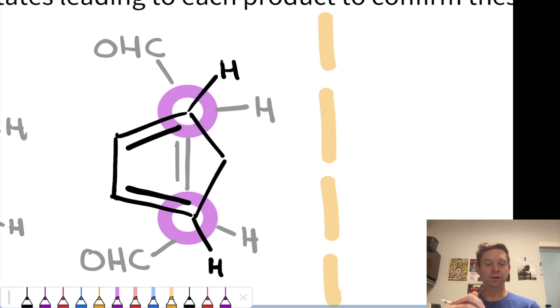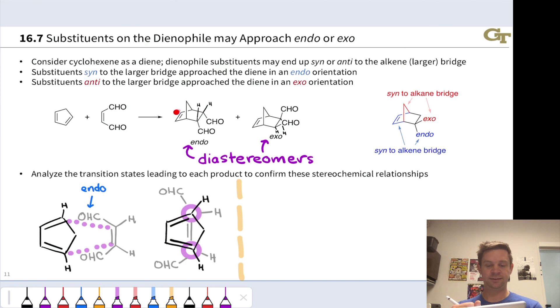And so what we can notice here, for instance, is these aldehyde groups are going to end up cis or syn to these carbons, which become part of this alkene bridge in the product.